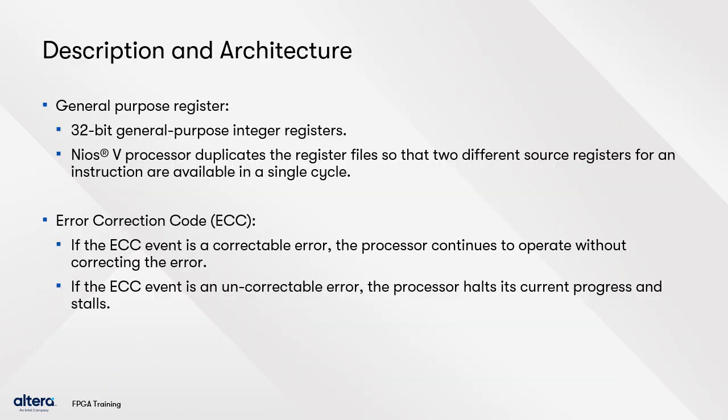The general-purpose register is duplicated to two different source registers so that an instruction value is available in two locations. The NEOs 5 processor has the option to enable error detection and ECC status. When an ECC event occurs, the processor transmits the source ID and ECC status to the ECC interface. Refer to the NEOs 5 processor reference manual for detailed differences between each functional unit across all NEOs 5 processor variants.